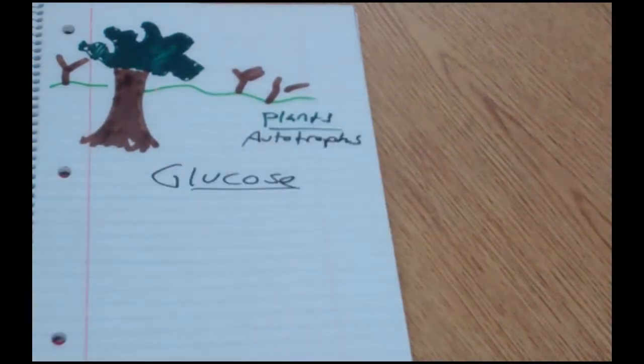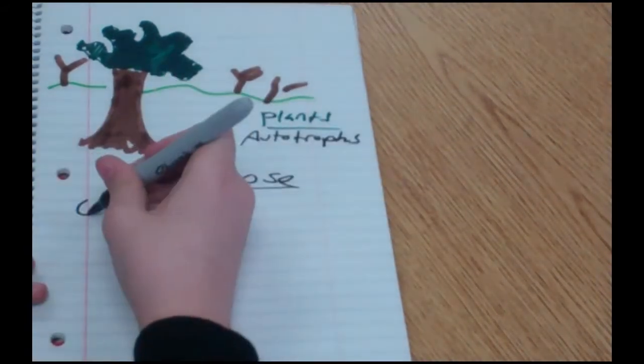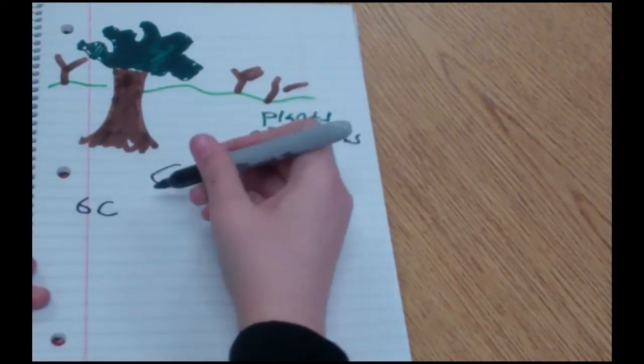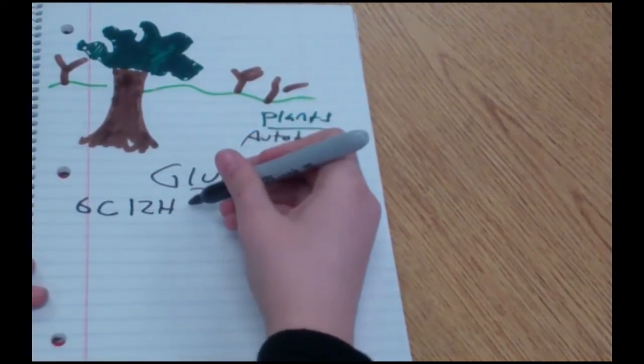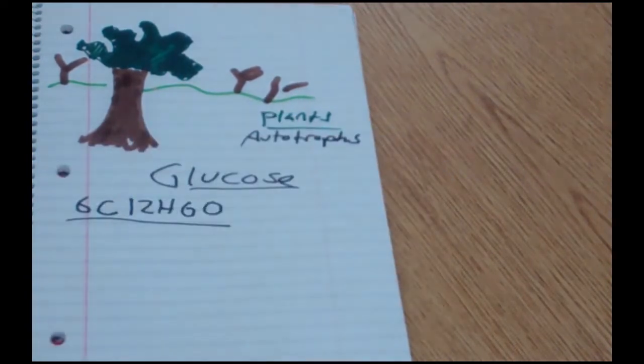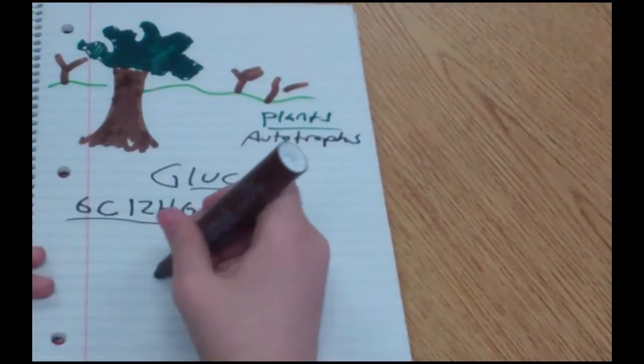Your food is a particular type of food called glucose, which is made of six carbon molecules, twelve hydrogen molecules, and six oxygen molecules. To obtain these ingredients, you will need to do several different things.